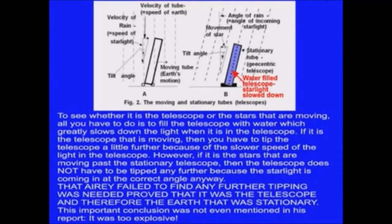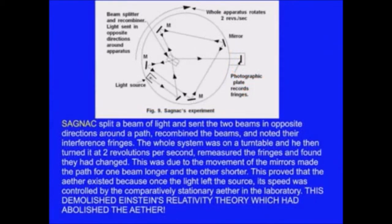George Ellis said, people need to be aware that there is a range of models that could explain the observations. For instance, I can construct you a spherically symmetrical universe with earth at its center, and you cannot disprove it based on observations. You can only exclude it on philosophical grounds. In my view, there is absolutely nothing wrong in that. What I want to bring into the open is the fact that we are using philosophical criteria in choosing our models. A lot of cosmology tries to hide that.